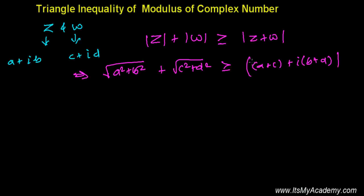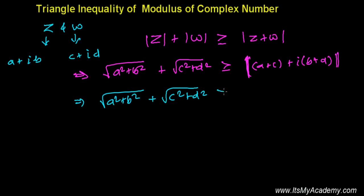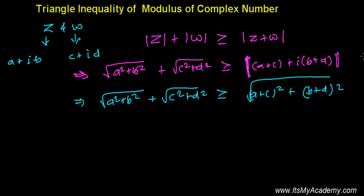So the inequality becomes: √(a² + b²) + √(c² + d²) is greater than or equal to √((a + c)² + (b + d)²).